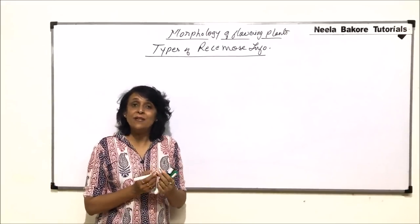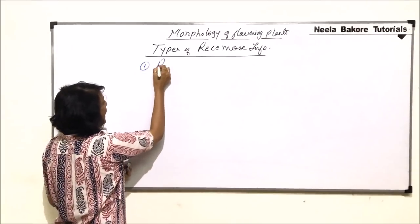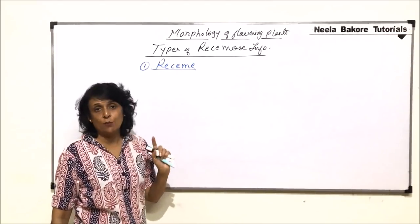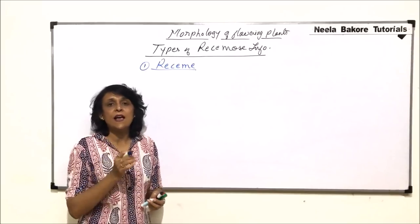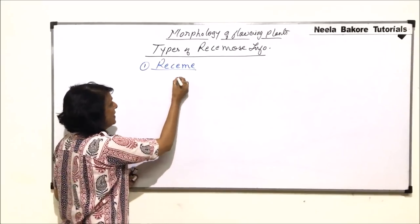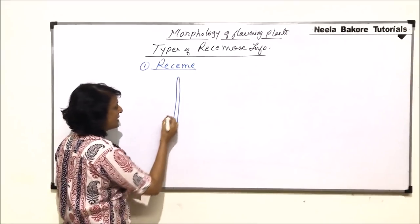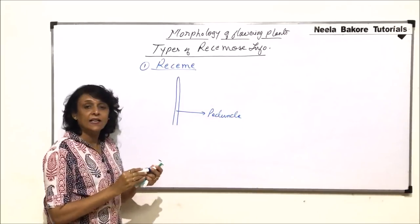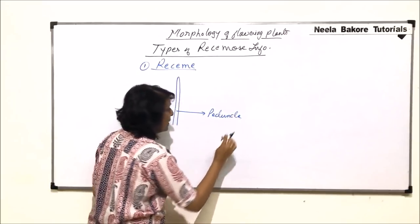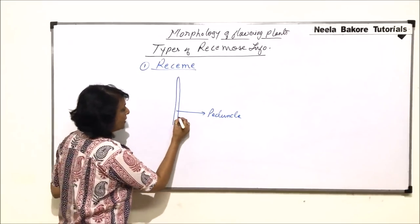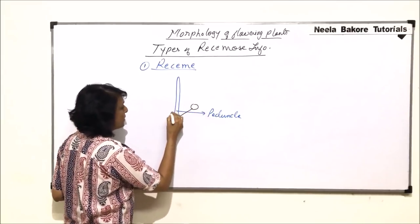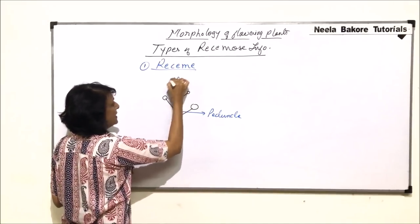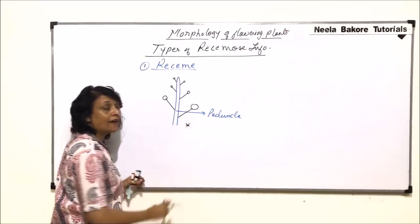There are a variety of subtypes and the first one is known as raceme. Raceme is actually a blueprint of the racemose inflorescence — exactly how we define racemose inflorescence. The main axis is known as the peduncle. On this peduncle, flowers are arranged in an acropetal manner, meaning the lower flowers are bigger and as we move up, the upper flowers get smaller and smaller.